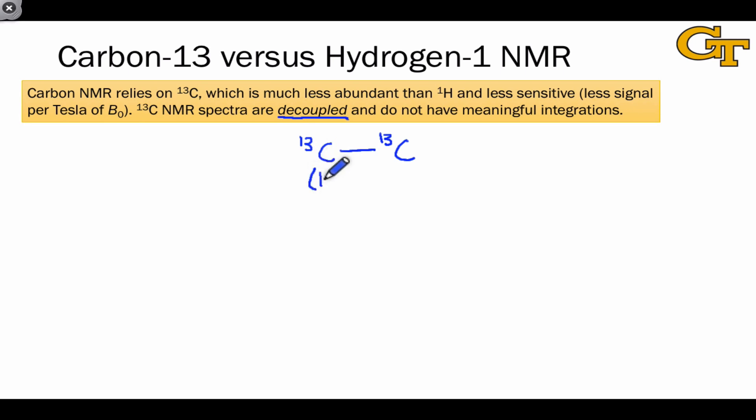If there's a 1% chance of a carbon-13 nucleus existing here, and a 1% chance of a carbon-13 nucleus existing here, then the chances of two carbon-13 nuclei being bound to each other are extremely tiny. And so we don't observe coupling of carbon nuclei in carbon-13 spectra, so all our signals are singlets.